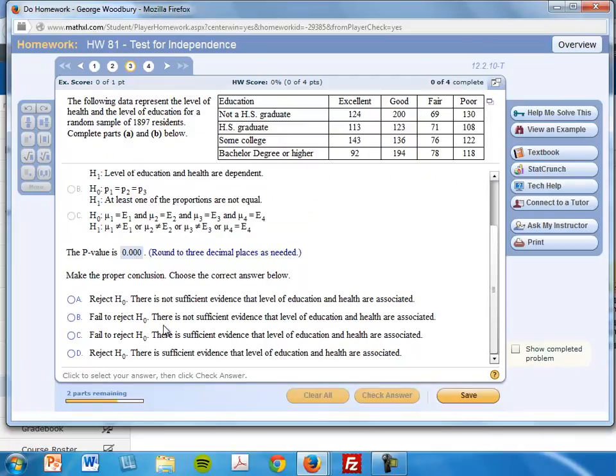Make the proper conclusion. Because the p-value is low, I know I'm going to reject the null hypothesis. So that's either A or D. And remember, when you reject the null hypothesis, that means that you do have enough evidence that H1 is true. In other words, that education and health are associated.